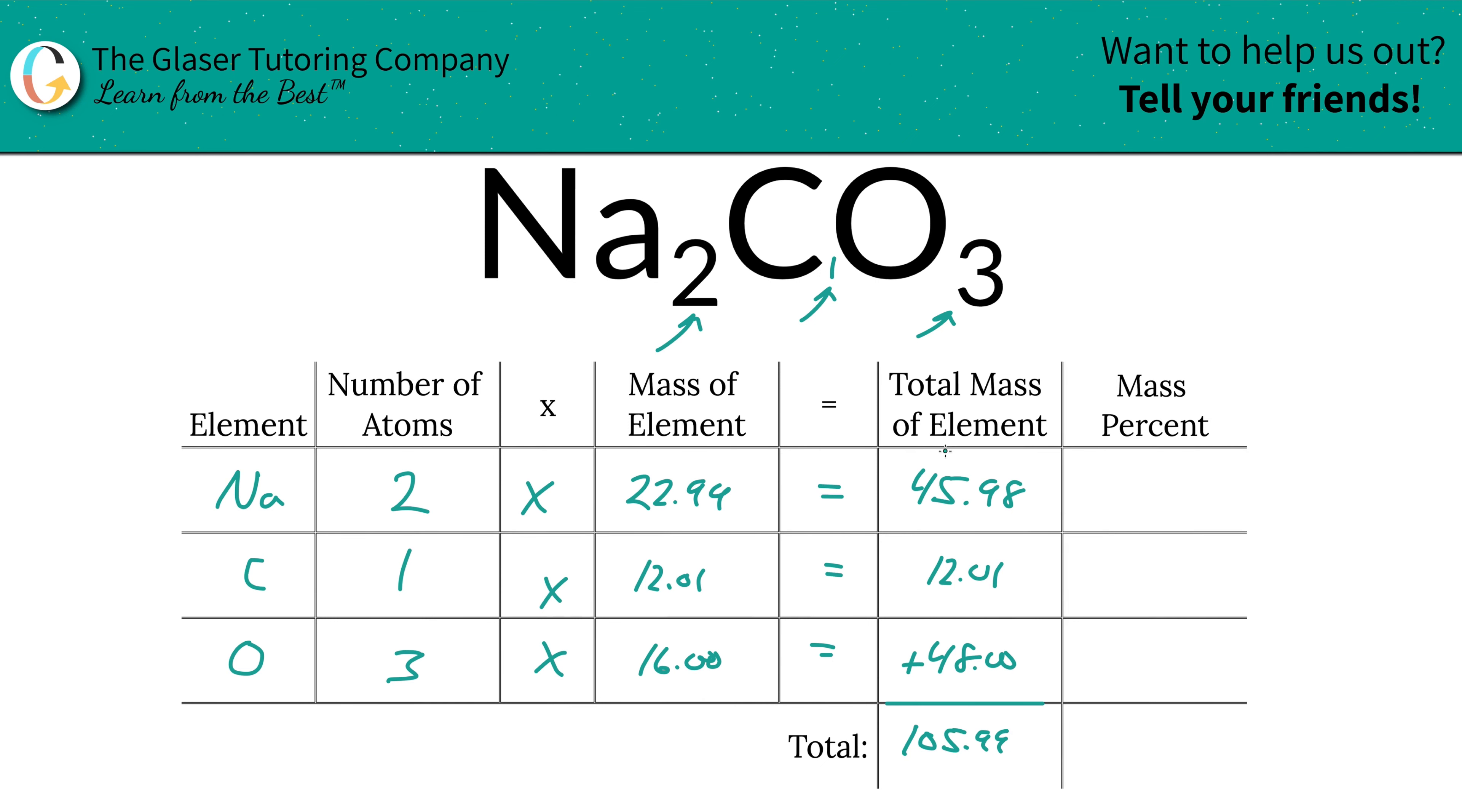So to find the mass percent of sodium, we're going to take the total mass of the sodium, 45.98 units of mass, divided by then the total mass of the entire compound, 105.99. Hence why we had to do that first. Now you don't have to worry about the units here because they will cancel. So who cares if it's gram per mole or AMU, doesn't really matter. So we're simply going to now plug that into the calculator if you need, 43.38%. That's what it works out to be for sodium.